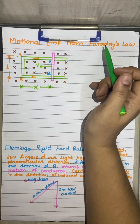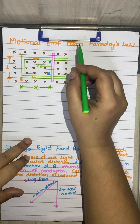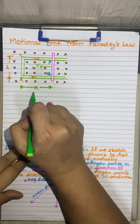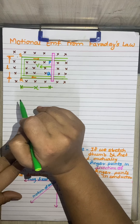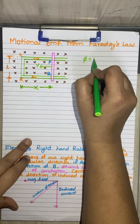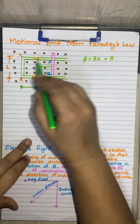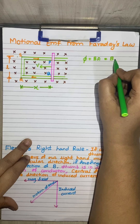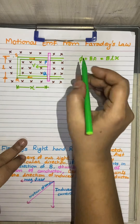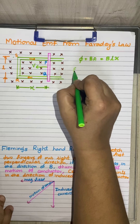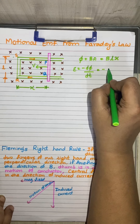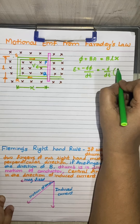Let us find the Motional EMF formula. Let X be the length of the loop lying inside the magnetic field at any instant of time T. Then the magnetic flux linked with rectangular loop PQRS is given by Φ = BA. The area of the loop is L × X, so Φ = BLX. According to Faraday's law, E = −dΦ/dt = −d(BLX)/dt.